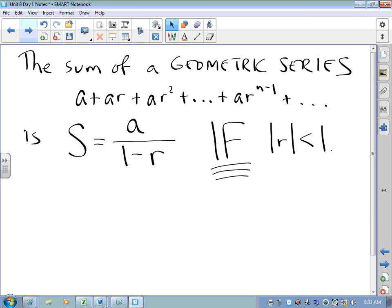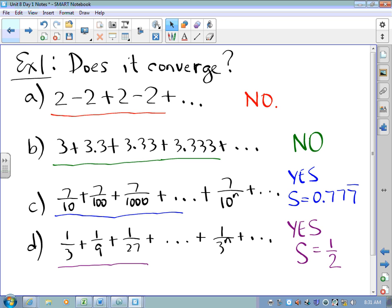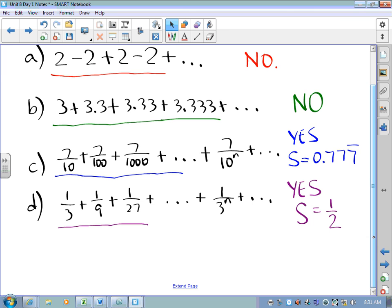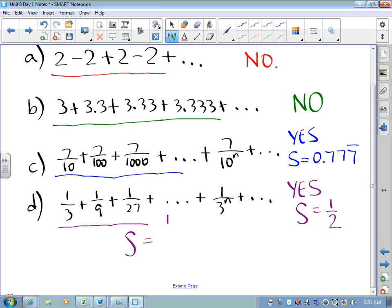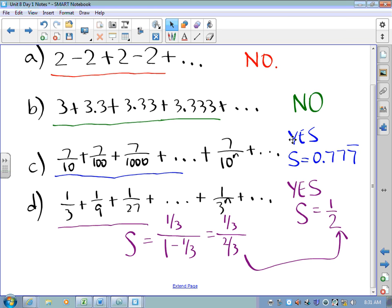You've got a first term, then you multiply by r to get the next one, and by r to get the next one, and by r to get the next one, and so on. And the sum of the geometric series is whatever the first term is over 1 minus r, provided that the absolute value of r is less than 1.